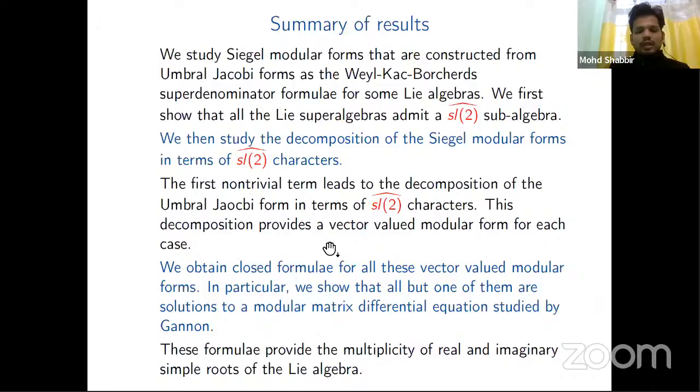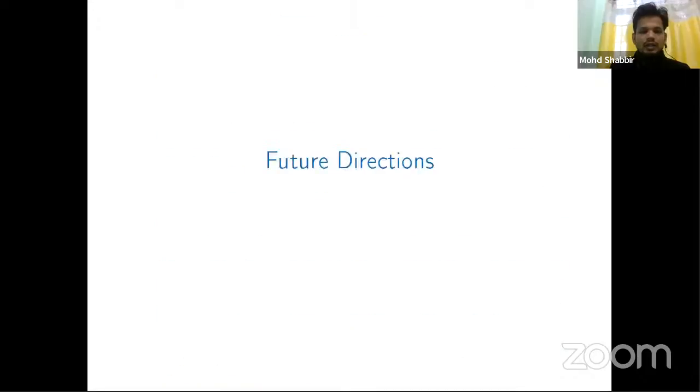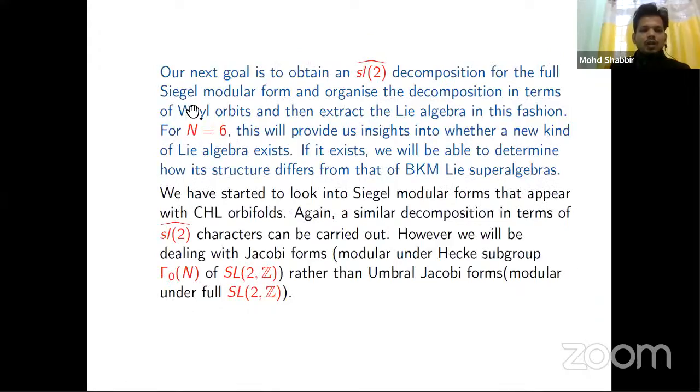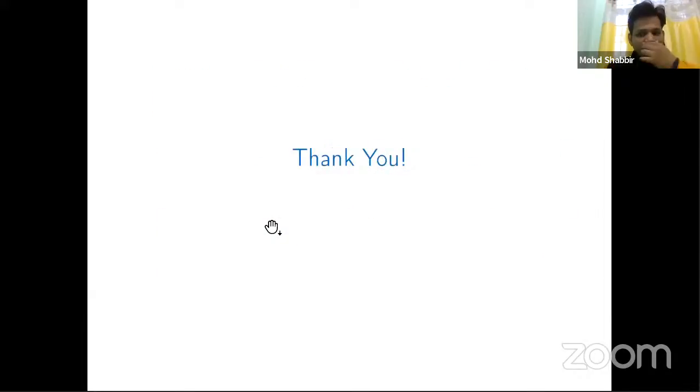This is the summary. We study Siegel modular forms that are constructed from Umbral Jacobi forms as the Weyl-Kac-Borcherds denominator formulas. We first show that all the Lie superalgebras admit sl(2) head subalgebras. We then study the decomposition of Siegel modular forms in terms of sl(2) characters. The first nontrivial term leads to the decomposition of the Umbral Jacobi forms in terms of sl(2) characters. This decomposition provides a vector-valued modular form for each case. We obtain closed formulas for all these vector-valued modular forms. In particular, we show that all but one of them are solutions to a modular matrix differential equation studied by Kaneko and Zagier. These formulas provide the multiplicity of real and imaginary simple roots of the Lie algebra. The future direction: our next goal is to obtain a simpler description for full Siegel modular forms, and also we have started to look into Siegel modular forms for the CHL orbifolds. Thank you.